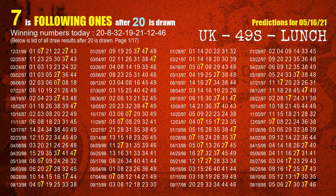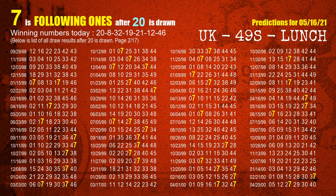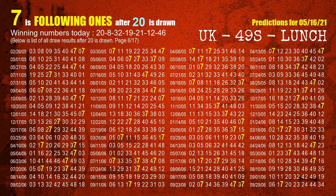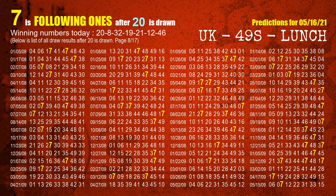First, we'll find out the following ones through today's result. Following numbers refer to those numbers being picked on the next draw after this one. The first winning number is 20. We list all draw results which are after a draw with 20 as a winning number. The most frequently following units digit is 7 when 20 is the winning number in the last draw. We highlight the units digit 7 in yellow for you.